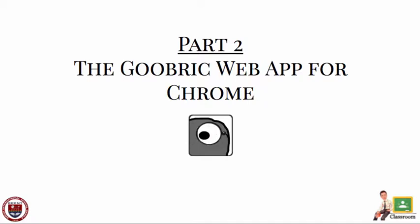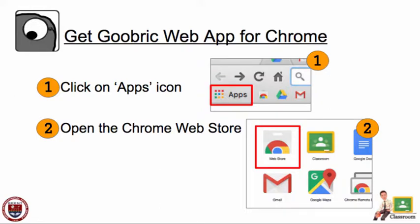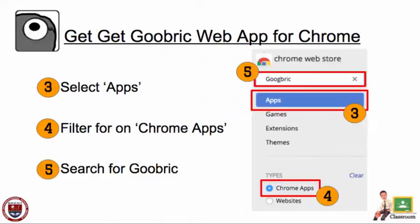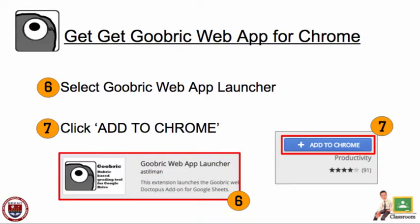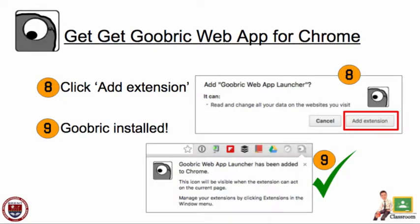Second, we're going to talk about the Goobric web app for Google Chrome. Open up the Google Chrome web browser and click on the Apps icon in the top left-hand corner. When you do this, you will see the icon for the Google Web Store. Within the store, select Apps and specify that you are looking for Chrome apps, then search for Goobric. When you find the Goobric web app launcher, click the Add to Chrome button. You will be asked to add the Goobric web app launcher — click Add Extension. You know it has been added when you see the icon in the top right-hand corner of your browser.